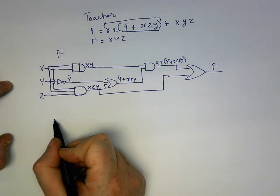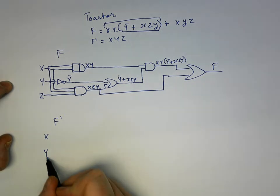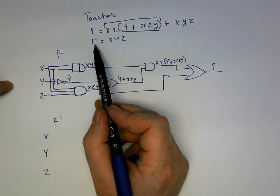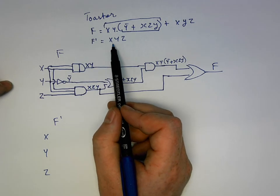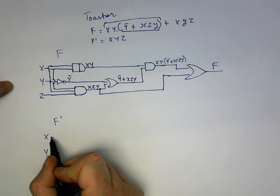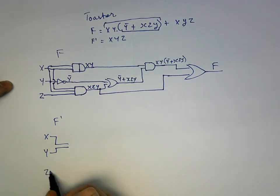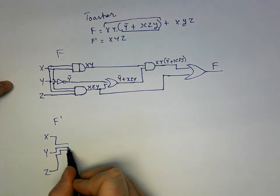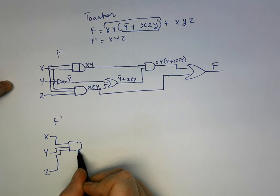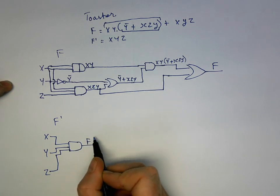So the important thing is to make sure that it's clear, and we just do each element inside of here. Now the resultant circuit, f prime, is simply going to be three inputs: x, y, and z. And we see here that this f prime expression is just yielding down to x AND y AND NOT z. So we simply take three of those inputs and we pass these through one AND gate, and we get out the resultant f prime.